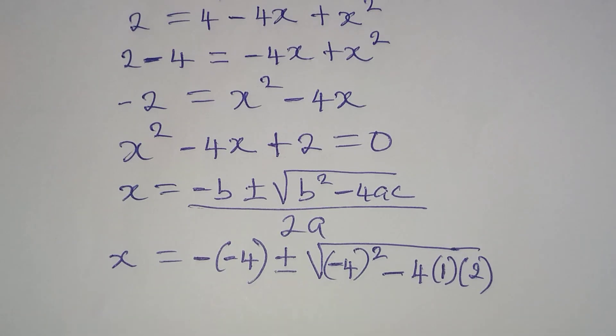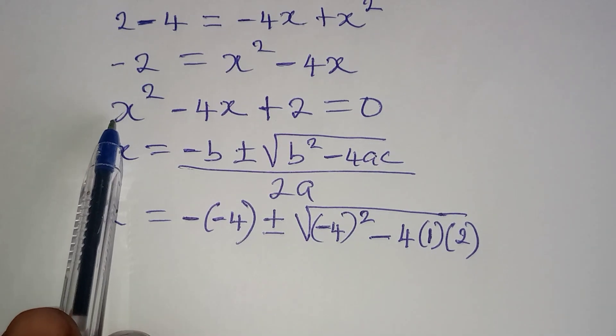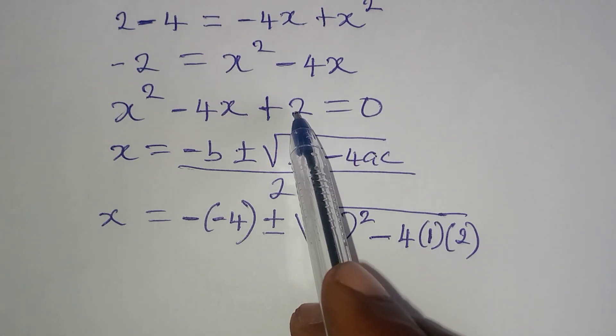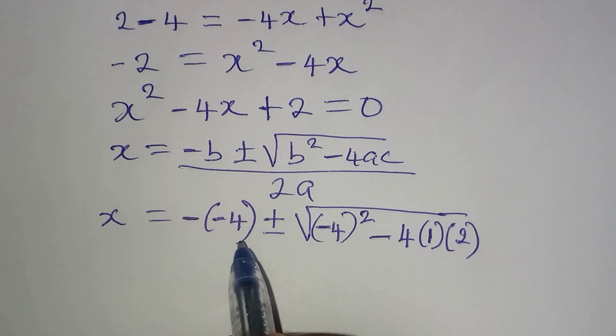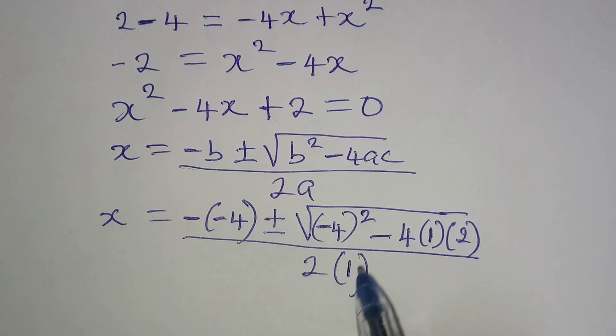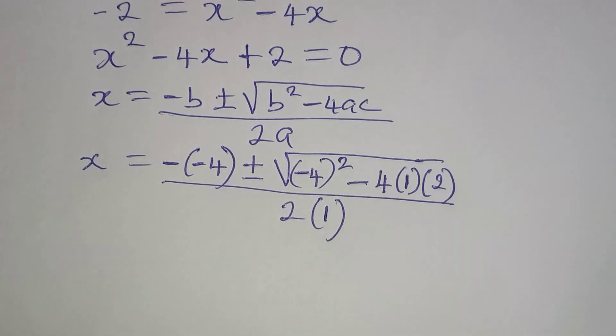Then minus 4 multiplied by 1 times 2. Now how did I get 1 and 2? We have ac. A is the coefficient of x squared, and that is 1. And c is the constant, which is 2. Now this will be divided by 2 times 1, because a is still 1.